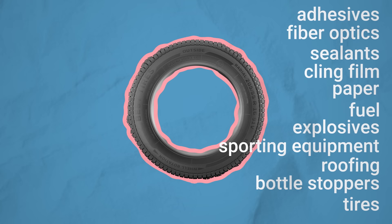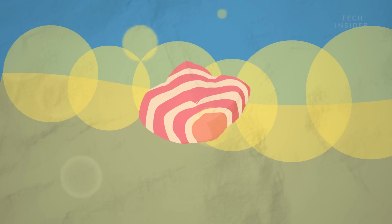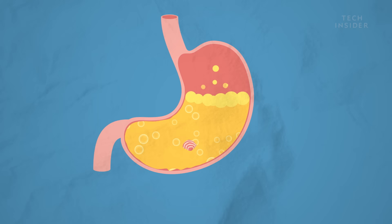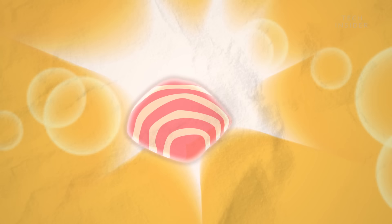But don't worry, the butyl in your gum won't make you sick. That's because it can't be broken down. The wad of chewing gum hits your stomach intact. Your saliva enzymes and your stomach acid can't touch the butyl in the gum base. But that doesn't mean it just hangs out.